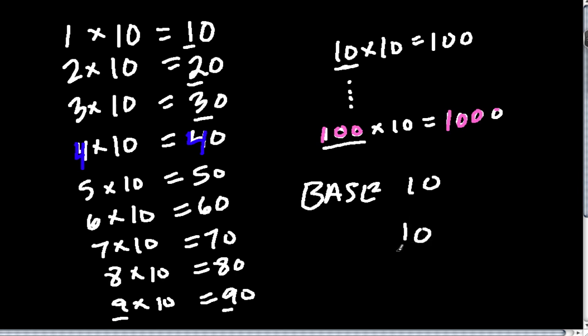Well, 10 is kind of like saying 1 ten and then 0 ones. And 100, that's kind of like having 1 hundred, 0 tens, and 0 ones. And then 1,000 is kind of like having 1,000. And then 0 hundreds, 0 tens, and 0 ones.